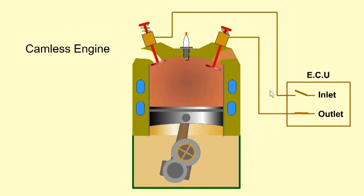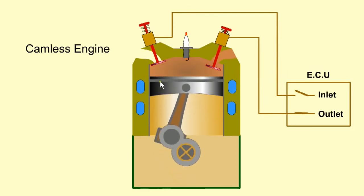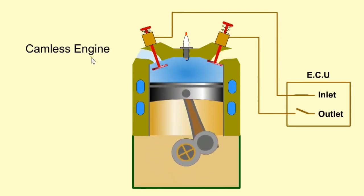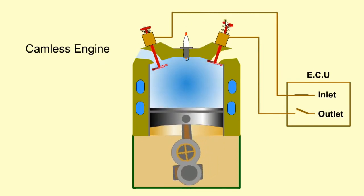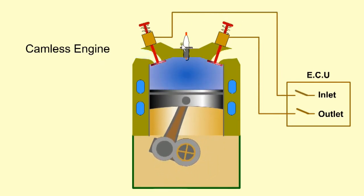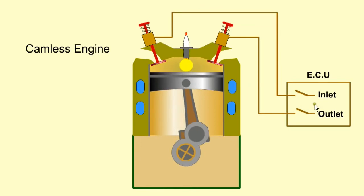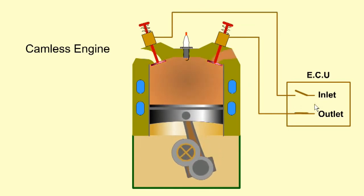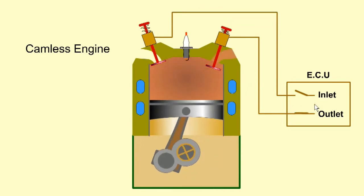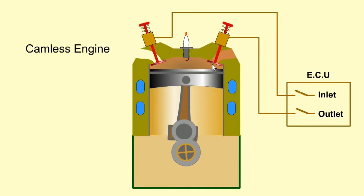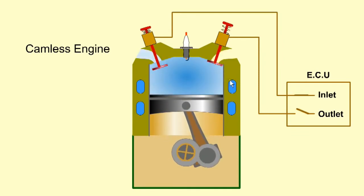A further development with the operation of valves is the camless engine. It does not have a camshaft and relies on electrical solenoids activated by the ECU to operate the valves. This allows immense flexibility with the control of timing and lift of both the inlet and exhaust valves.